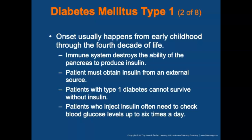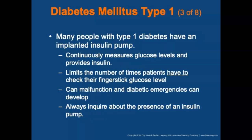Onset usually happens in early childhood through the fourth decade of life. The immune system destroys the ability of the pancreas to produce insulin, so the patient must obtain insulin from an external source. Patients with type 1 diabetes cannot survive without it — they inject insulin often and may need to check blood sugar levels up to six or more times a day. Many have an implanted insulin pump that continuously measures glucose levels and provides insulin at correct doses. However, the pump can malfunction, so always inquire about its presence and whether it is working properly.